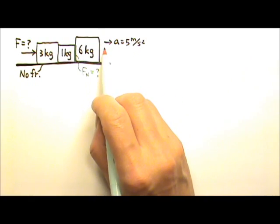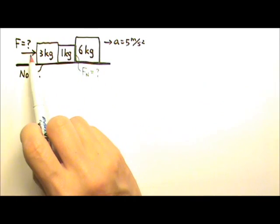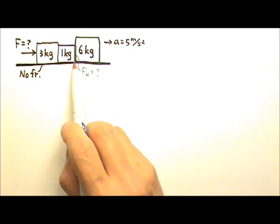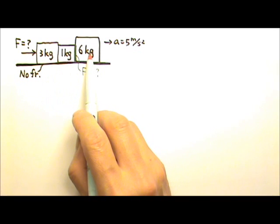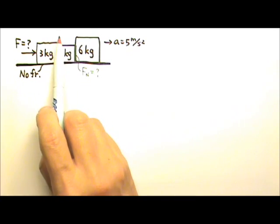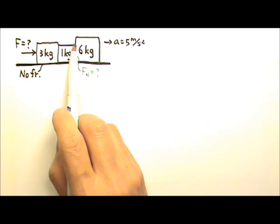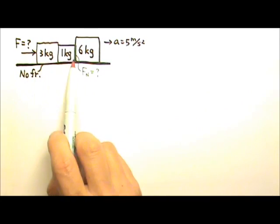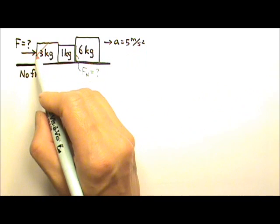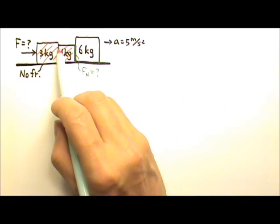We already have the direction of acceleration, so we just have to draw the force diagram next. We're looking for the pushing force and the normal force between the blocks. Even though we have three blocks, we do not have to draw three force diagrams. Because it won't matter if this is a 4 kilogram block or two blocks combined — we can put these two in a black box and treat this problem as if we have a 4 kilogram and a 6 kilogram block. This whole thing is one block for convenience, because there's no need to separate the two.